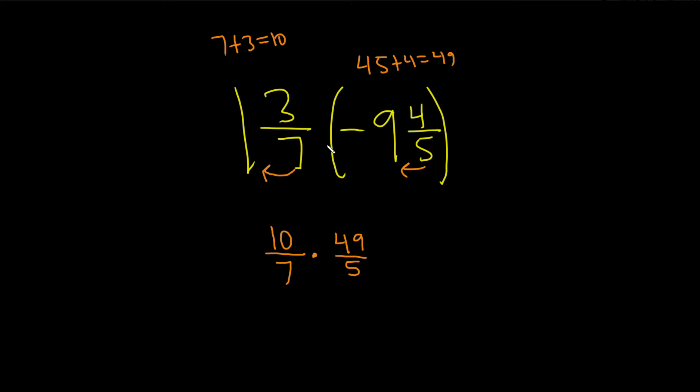Now we need to try to simplify. Remember, the numbers on top are allowed to cancel with the numbers on the bottom. So the 10 and 5 can be reduced. 5 goes into 5 one time, so we put a line through it and put a 1 here. 5 goes into 10 two times, so we put a line through it and put a 2 here.